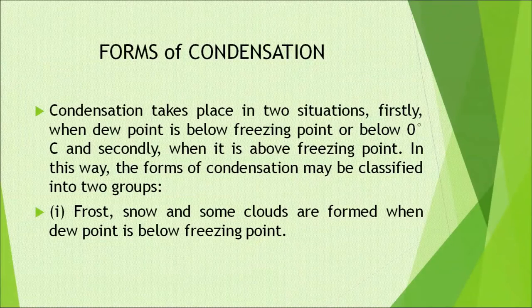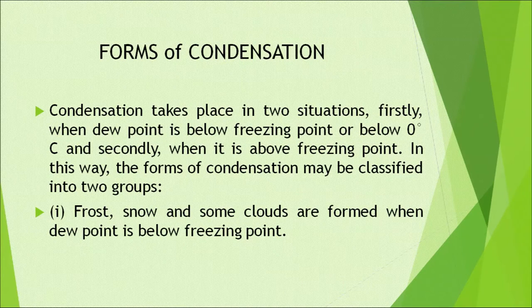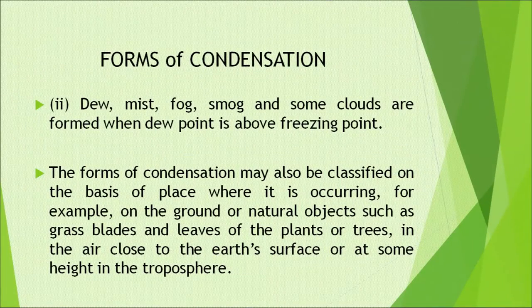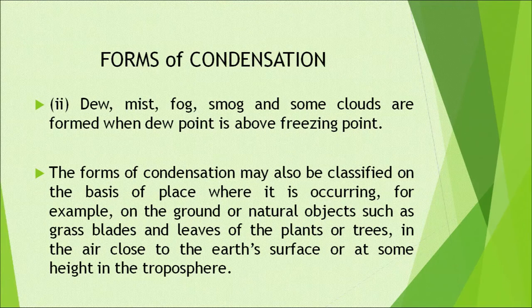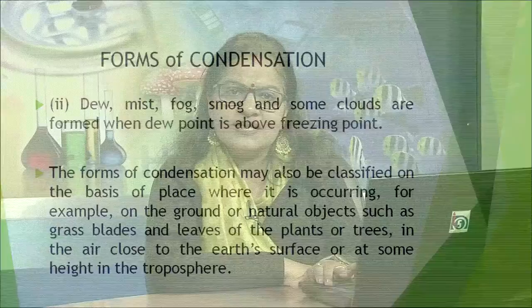What are the forms of condensation? Condensation takes place in two situations: when the dew point is below freezing point or below zero degrees Celsius, and when it is above freezing point. The forms of condensation may be classified into two groups. Frost, snow, and some clouds are formed when dew point is below freezing point. Dew, mist, fog, smog, and some clouds are formed when dew point is above freezing point. The forms of condensation may also be classified on the basis of where it occurs — on the ground or natural objects, in the air close to the earth's surface, or at some height in the troposphere. Condensation in dew form occurs when there is clear sky, little or no wind, high relative humidity, and cold long nights.